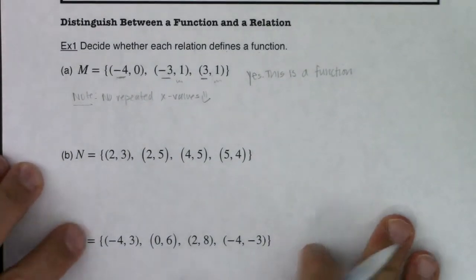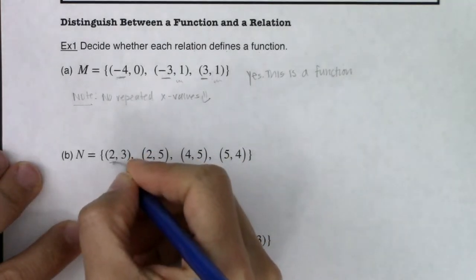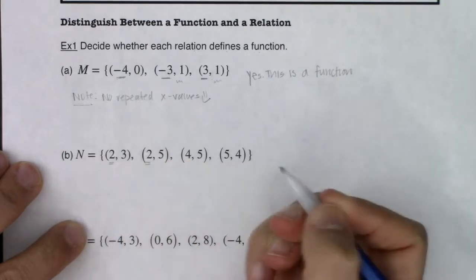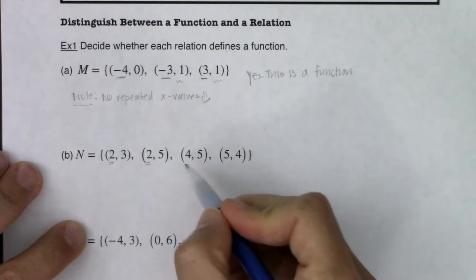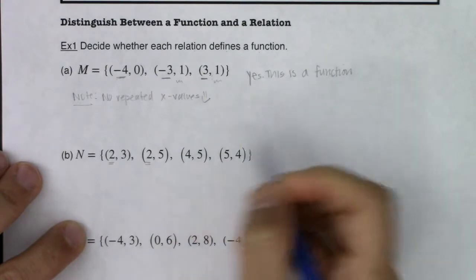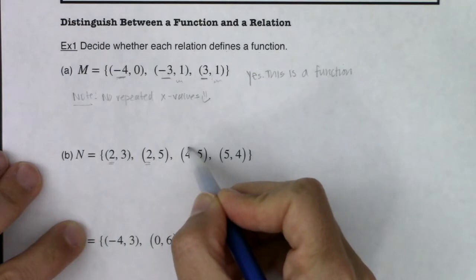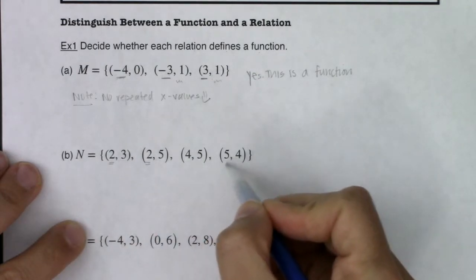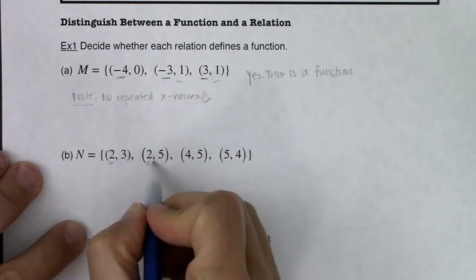If we take a look at this, my spidey senses now are going off because you see (2, 3) and (2, 5). I want you to take note that we had a doubling up on an X coordinate. We had a repeated X value. This 4 and this 5, they're fine. They're distinct. This is the only ordered pair with an X coordinate of 4 in my relation. This is the only ordered pair with an X coordinate of 5 in my relation. But this is the problem.